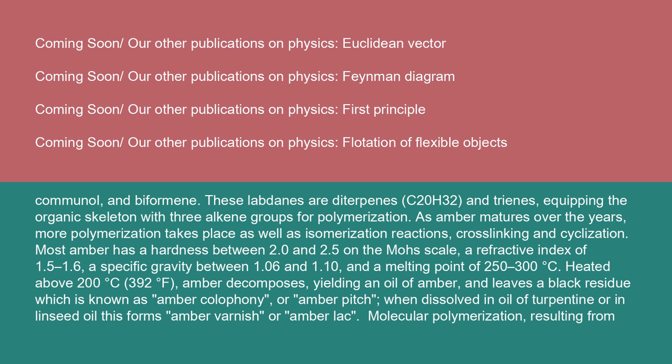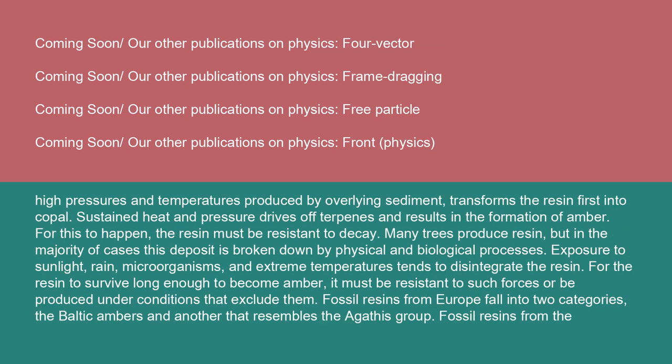Most amber has a hardness between 2.0 and 2.5 on the Mohs scale, a refractive index of 1.5 to 1.6, a specific gravity between 1.06 and 1.10, and a melting point of 250 to 300 degrees Celsius. Heated above 200 degrees Celsius (392 degrees Fahrenheit), amber decomposes, yielding an oil of amber, and leaves a black residue known as amber colophony or amber pitch. When dissolved in oil of turpentine or in linseed oil, this forms amber varnish or amber lac. Molecular polymerization, resulting from high pressures and temperatures produced by overlying sediment, transforms the resin first into copal. Sustained heat and pressure drives off terpenes and results in the formation of amber.